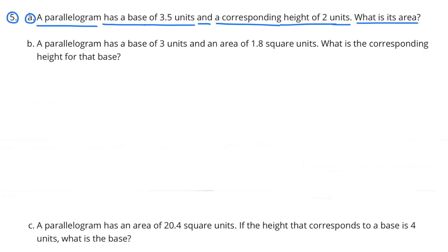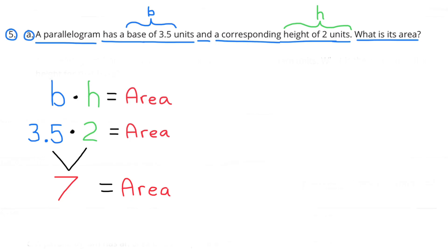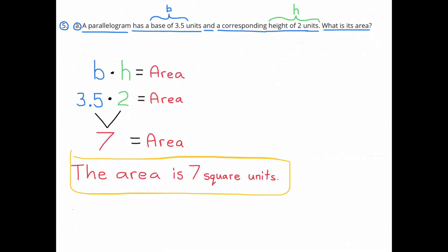Number 5A: A parallelogram has a base of 3.5 units and a corresponding height of 2 units. What is its area? To find the area, we multiply the base times the height. 3.5 times 2 equals 7. So the area is 7 square units.